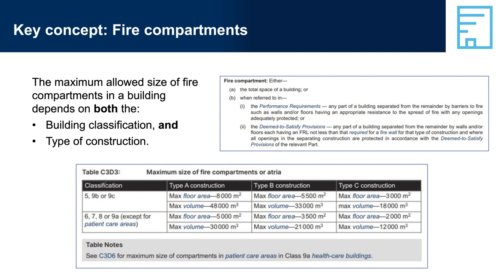For example, a building may only be required to be built using Type C construction. If this would result in fire compartments that are too small to be practical for the purpose of the building, then the building designer could use a more fire-resistant type of construction — Type B or Type A. This would then allow design and building of larger spaces while still complying with performance requirements. There are special rules for large, isolated buildings of Class 5 to 9 under C3D4.